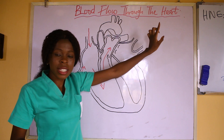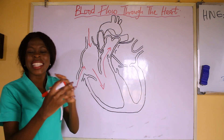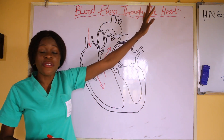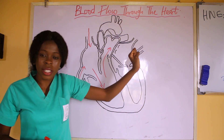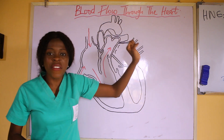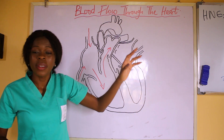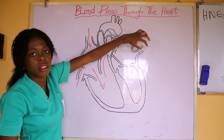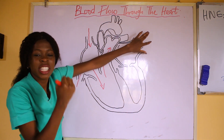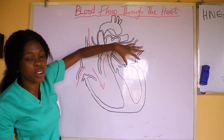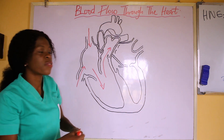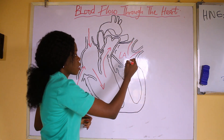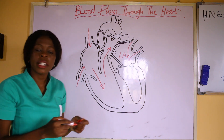After oxygenation in the lungs, we now have the left and the right pulmonary veins. The right pulmonary vein brings fresh blood from the right lung, and the left pulmonary vein brings fresh blood from the left lung. Both are bringing fresh, oxygenated blood, and they enter into the left atrium.